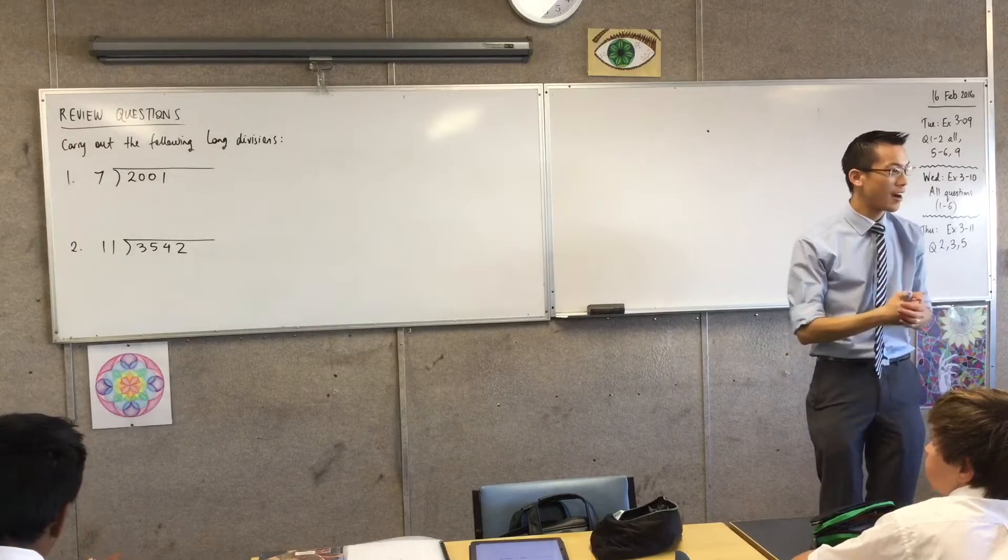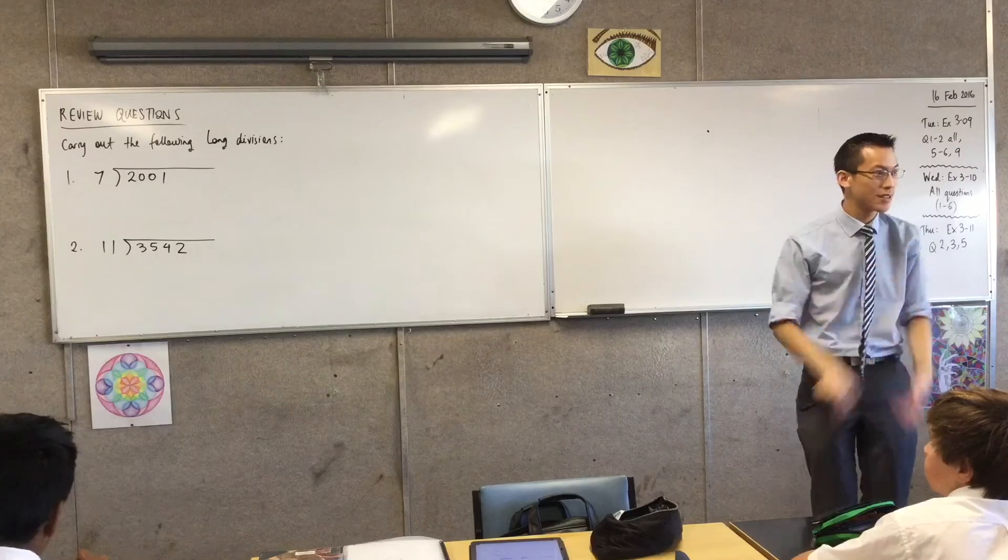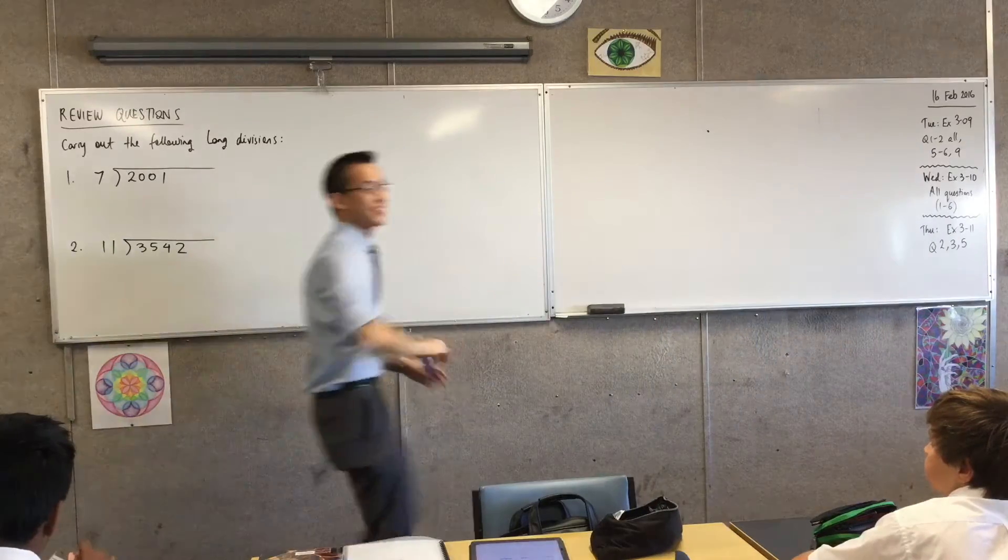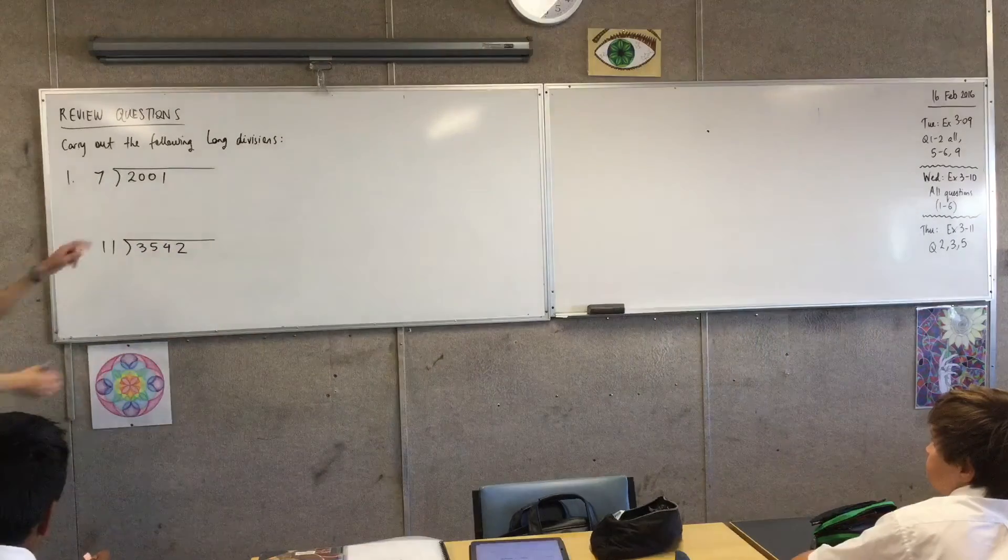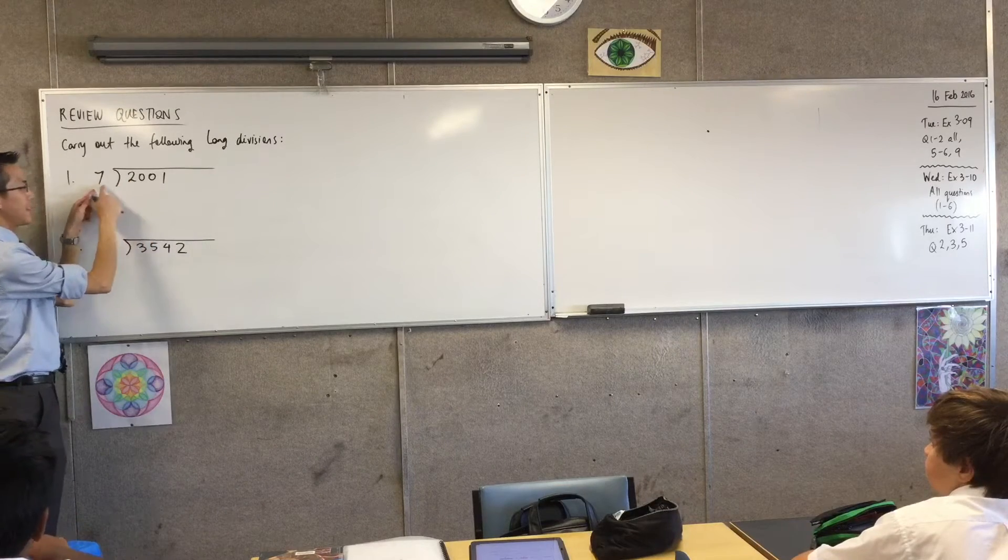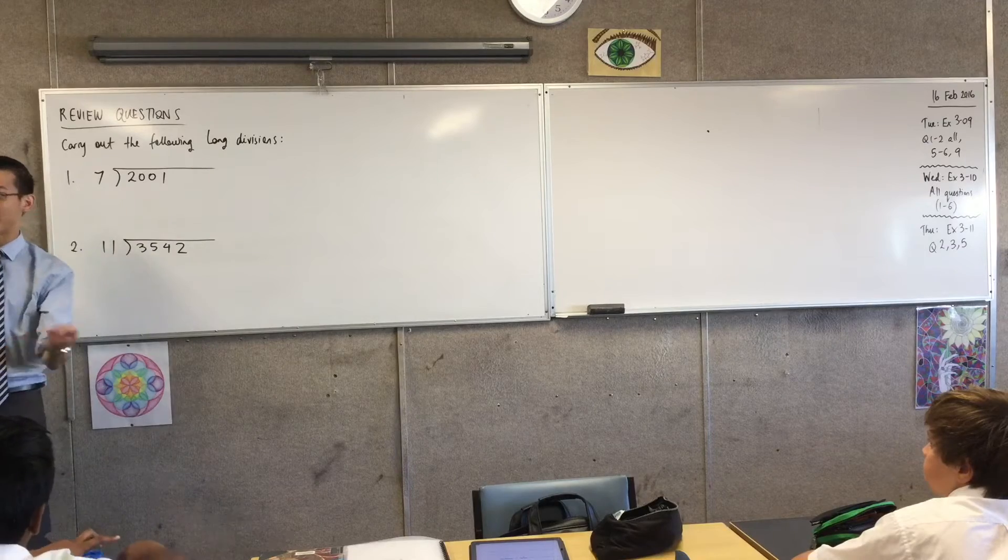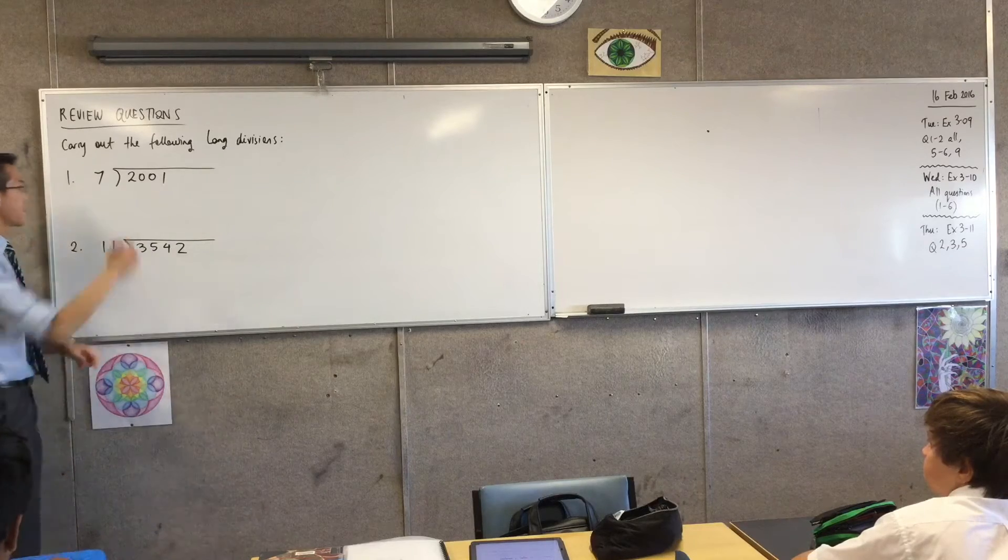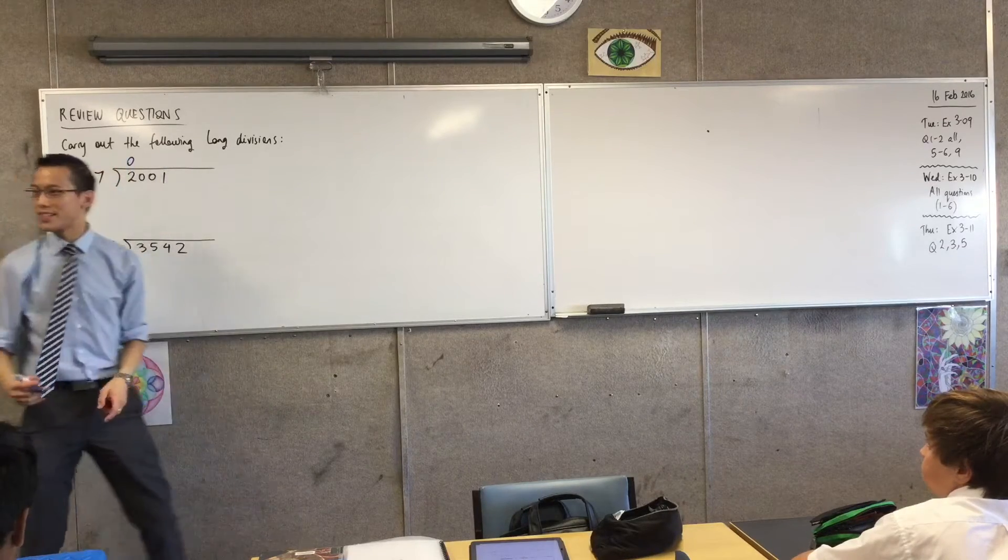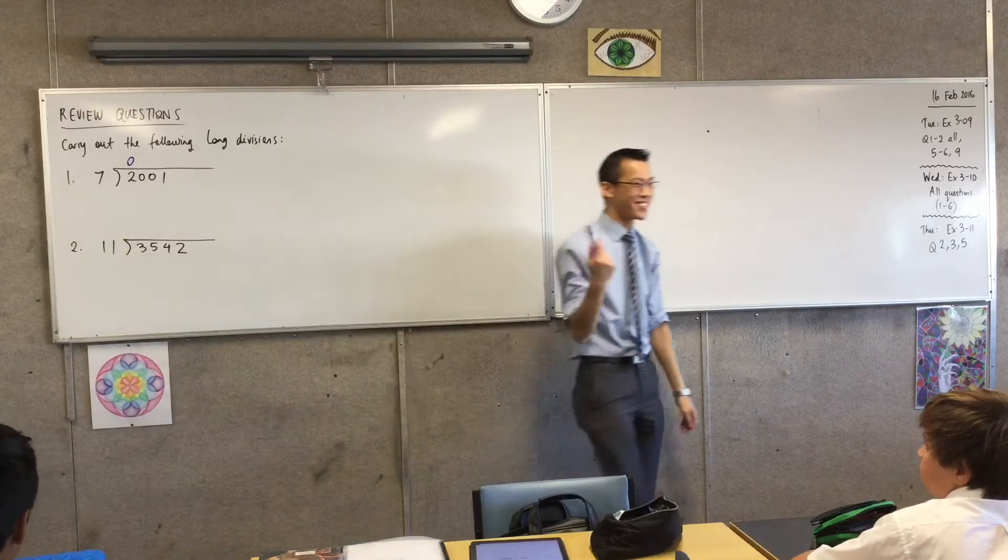So what's the first question I ask of 2001 and 7? What do I do with this? Yes, Christian? How many times 7 goes into 2? Very good. So I'm going to go through each one of these numbers and think about how many times I can fit it in there. How many times do I fit 7 into 2? It's not 0. And if you remember, when we're doing the diagnostic, it's really important you write 0s down.